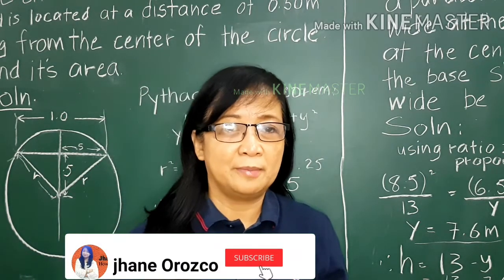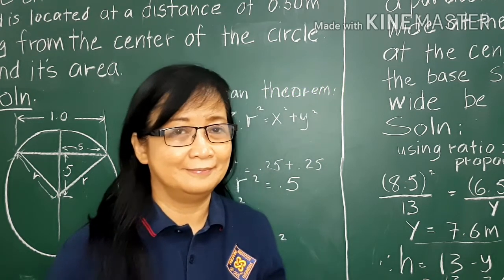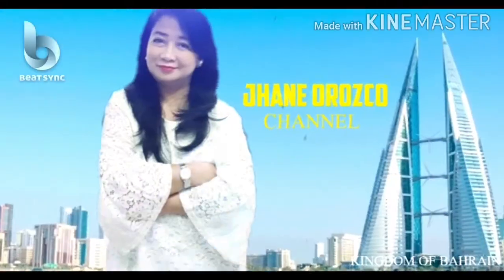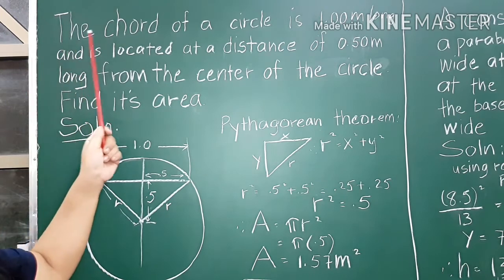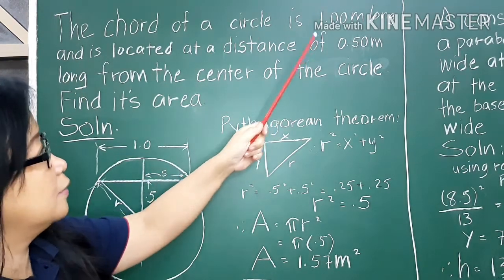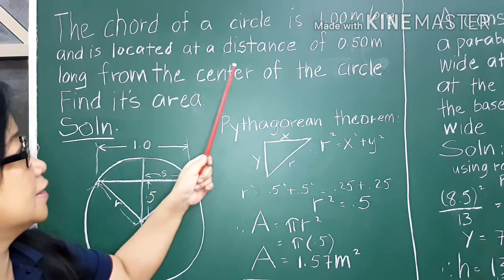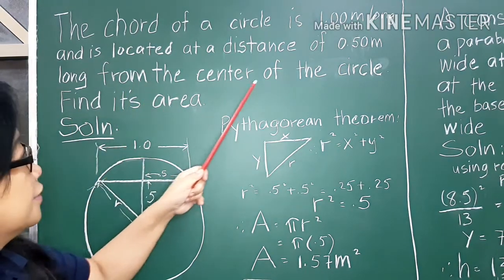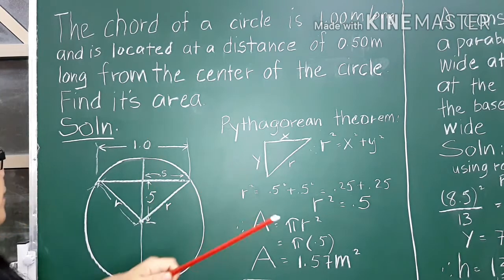Today we will solve two sample math problems for civil engineering board exam. The chord of a circle is one meter long and is located at a distance of 0.5 meter from the center of the circle. Find its area. Here I already wrote the solution.